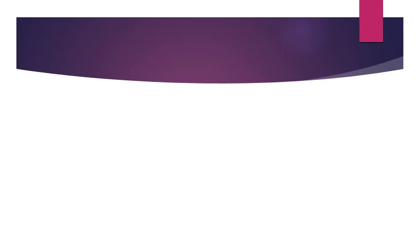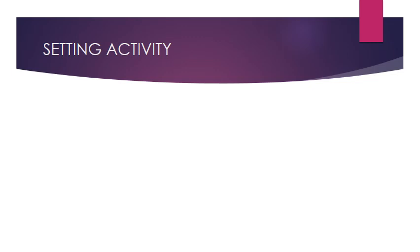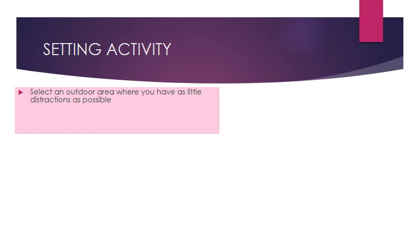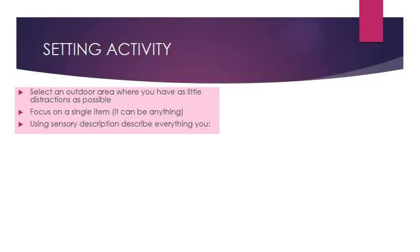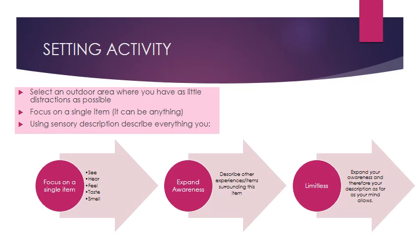For those who weren't there on the day, this is a setting activity where you select an outdoor area with as little distraction as possible. Start by focusing on a single item — it can be something quite small, like a blade of grass or an ant walking by. Then use sensory description to describe everything you can see, hear, feel, taste, and smell while looking at that small object. Then describe other items surrounding it — it might be the environment, or what the ant is walking on.